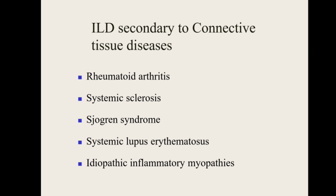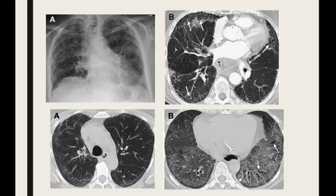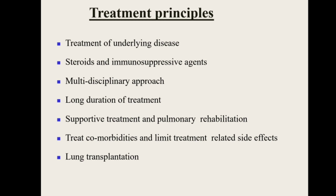ILD can also be secondary to connective tissue disorders such as rheumatoid arthritis, systemic sclerosis, Sjögren's syndrome, SLE, and inflammatory myopathies. A thorough history is needed: look for skin and joint lesions, difficulty swallowing, Raynaud's phenomenon, and proximal muscle weakness. PFT shows a restrictive pattern. Additional tests include RF, anti-CCP, ANA screening and ANA profile. CT appearance in CTD-ILD differs from IPF — involvement is not limited to basal regions; esophageal dilatation on CT may suggest systemic sclerosis. Treatment involves managing the underlying disorder with steroids, immunosuppressants, a multidisciplinary approach, long-duration treatment, and pulmonary rehabilitation. Lung transplantation is again the last resort.